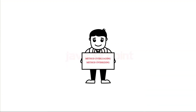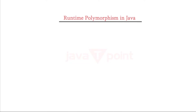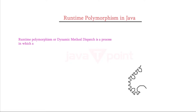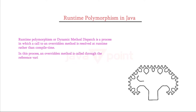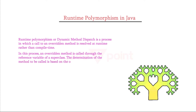We can perform polymorphism in Java by method overloading and method overriding. Now let's see what is runtime polymorphism in Java. Runtime polymorphism, or dynamic method dispatch, is a process in which a call to an overridden method is resolved at runtime rather than compile time. In this process, an overridden method is called through the reference variable of a superclass, and the determination of the method to be called is based on the object being referred to by the reference variable.